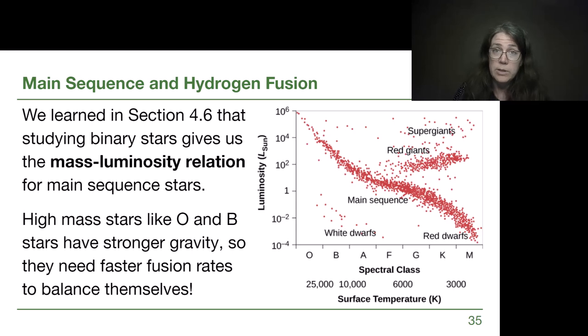We learned in section 4.6 that we study binary stars so that we can get a relationship between the mass of a star and its luminosity that works for main sequence stars only. When we look at an HR diagram like this one, that upper left corner of the main sequence, those O and B main sequence stars, they're a lot more luminous, which means they have a lot more mass. Because they have a lot more mass, they need to have that faster fusion rate and that means they're going through their fuel so much faster. We could say all of the opposite statements for the red dwarfs in that bottom right corner.